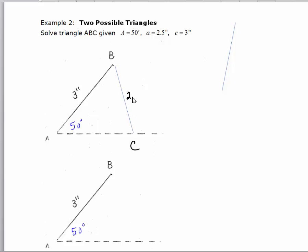Side A is 2.5 inches. This is not drawn completely to scale, but it's close. We can solve this triangle by using the ratio of A to sine of A, and then we can find angle C.